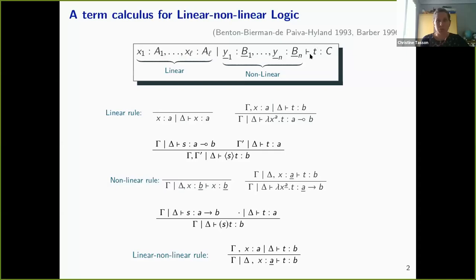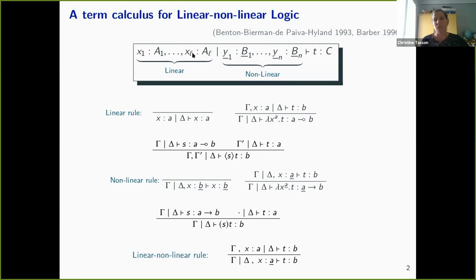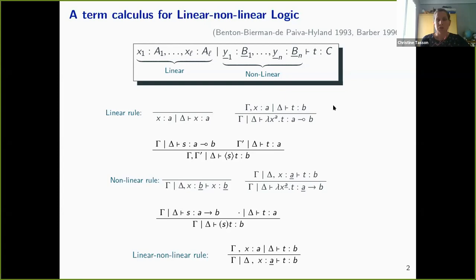We have a type judgment with a program T which will output some data of type C, using some variables or parameters with two sorts: either they are linear, meaning these variables can be used only once when computing a result of T, or the parameters can be nonlinear, meaning you can use them as many times as you want, or not use them at all.